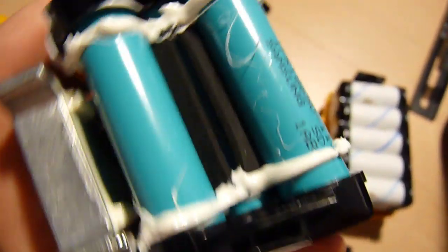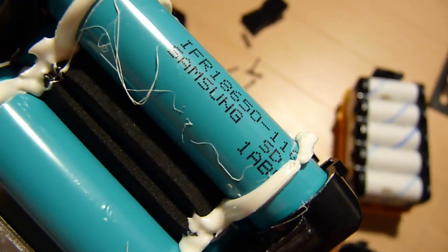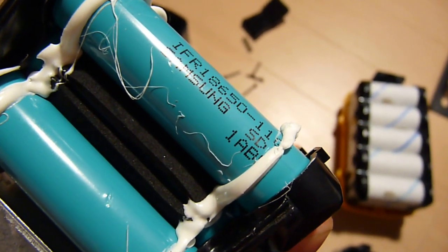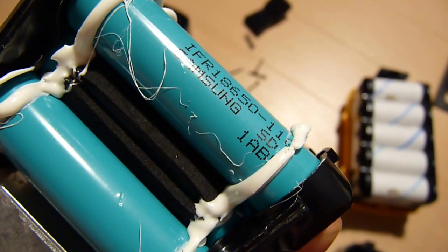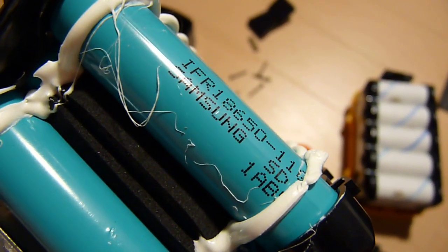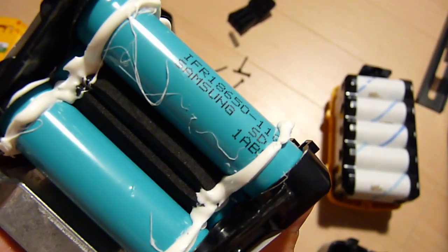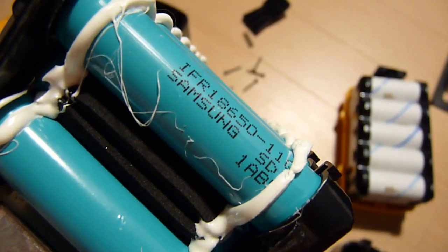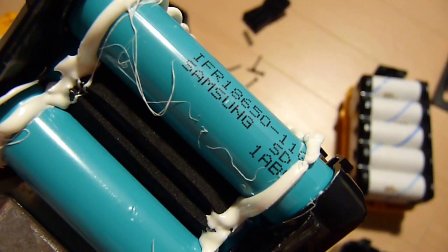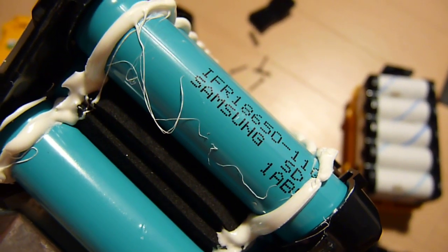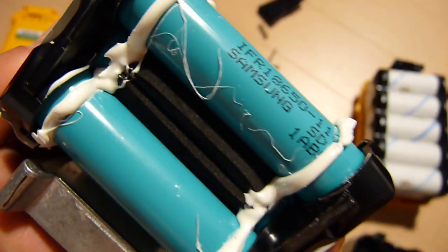Also, just based on other previous Samsung cells and tests by users on Candlepower and RC Groups forums, these things have under 1,000 charge-discharge cycles life. So they also have half the cycle life of A123-based batteries. So these things can also do very limited information, but based on previous models, they are probably 10, maybe 15 amps per cell maximum discharge current.